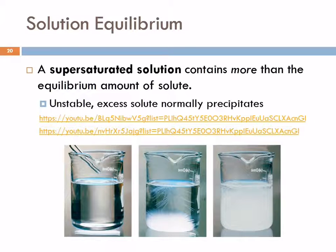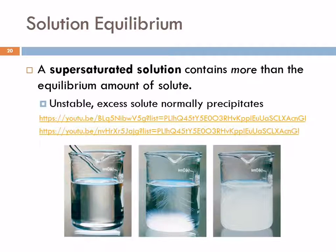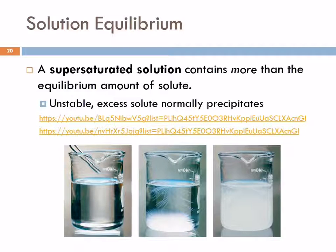And then we have a supersaturated solution, which contains more than the equilibrium amount of solute. Now that seems impossible, doesn't it? Supersaturated solutions are unstable, and the excess solute will usually precipitate out. The supersaturated solution is generally made by creating a saturated solution at a high temperature and allowing it to slowly cool down.